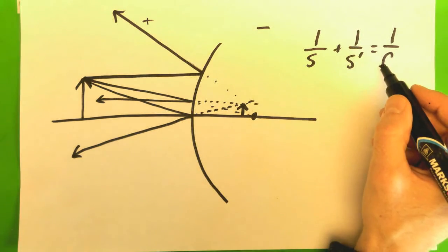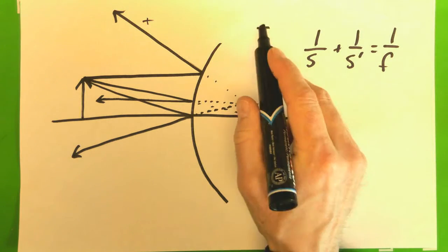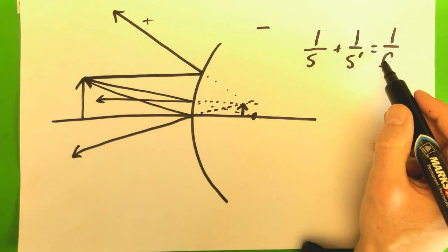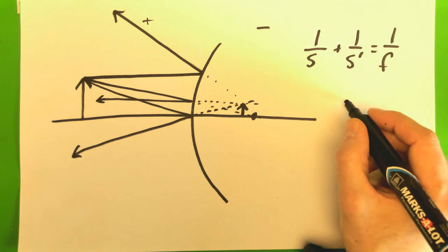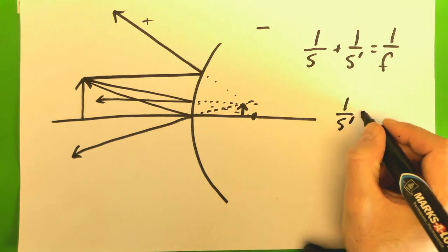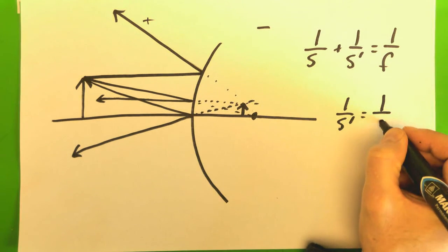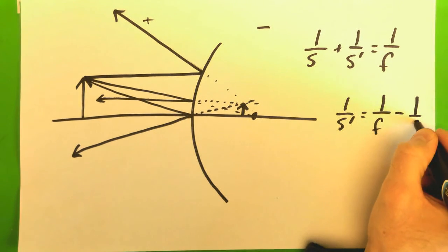Now, if f is negative, it's in this negative region. If that's negative, and s is always positive, then we can write it as one over s prime equals one over f minus one over s.